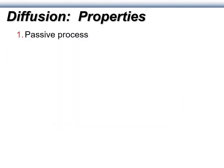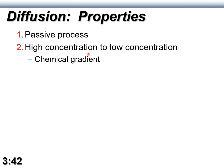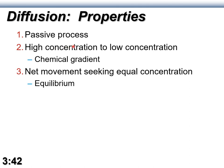Moving on to transport processes — the simplest is diffusion, which occurs when there's a gradient and the material can move. That's what makes it passive: it utilizes energy already in the system. We always move from high to low concentration — a chemical gradient. You have to invest energy to go the other way. We're seeking equilibrium, moving down the concentration gradient to a point where net movement is equal in all directions.